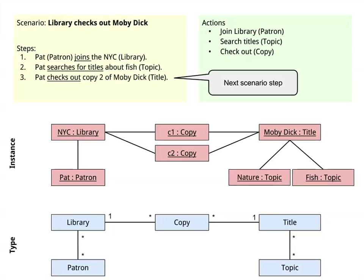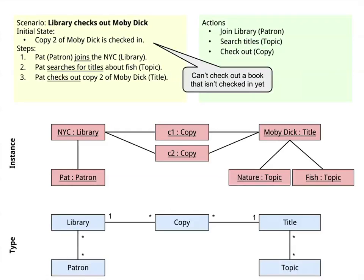The third step in the scenario is that Pat is going to check out copy number two of Moby Dick, which is the title. You can see the model is getting more sophisticated as I go through these. I have added a couple copies in the library, and I've added a copy as a copy of a title — i.e., a book — and I've linked all those things together.